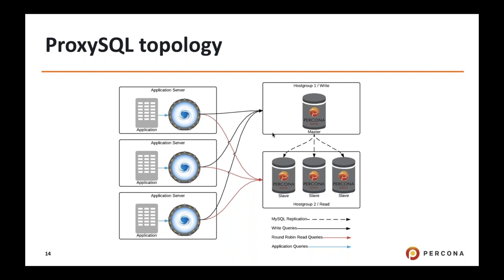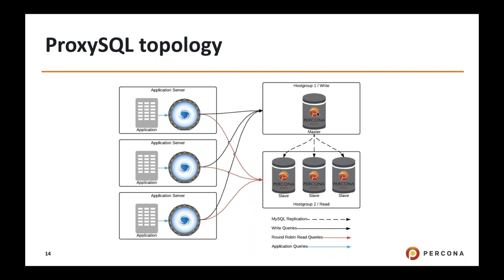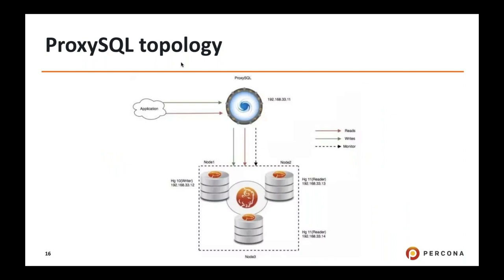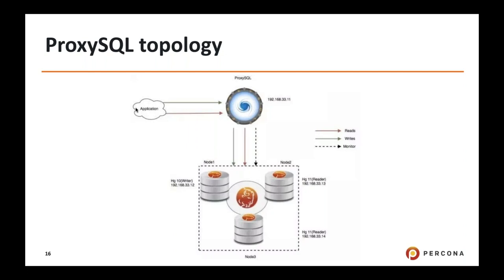In this topology, reads — shown by red arrows — go to the reader servers, and write queries go to the master/writer server. We also have an example with ProxySQL in the middle with three servers. Finally, for the cluster scenario, you have a PXC cluster with ProxySQL and the application, accessed via a single IP — which can be a load balancer or the ProxySQL IP itself.